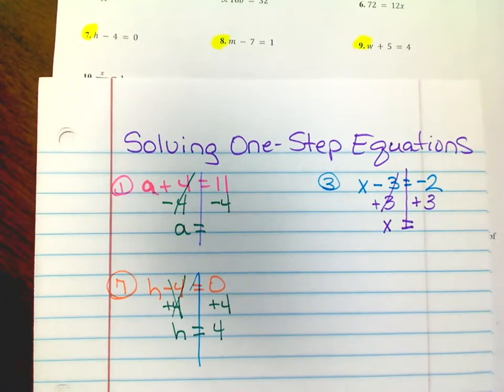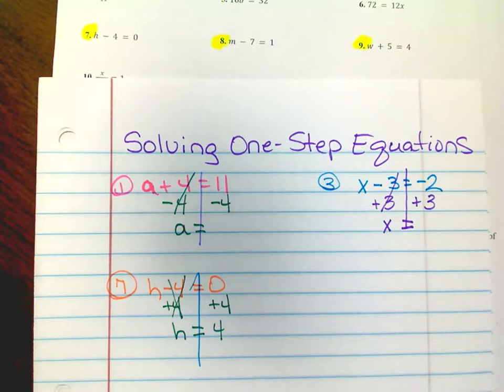You must show your work. Some of these are so easy, but you must show all of your work because when we go to two-step equations, you're going to get lost if you don't show your work.